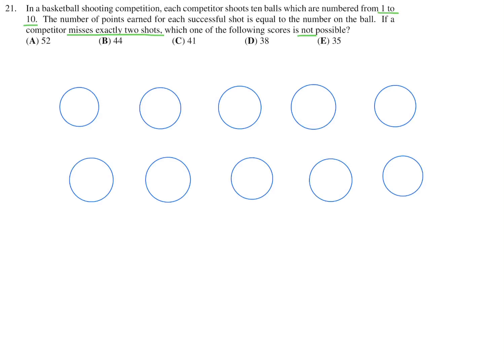So you have 10 basketballs and each of them is numbered 1 through 10. And when you shoot these balls, you get a score that's equal to the number on the ball. They're saying that you are missing exactly two shots, which one of the scores is not possible. Let's say you get them all in. You get a total of 1 plus 2 plus 3 all the way up to 10 as a score, which is equal to 55.